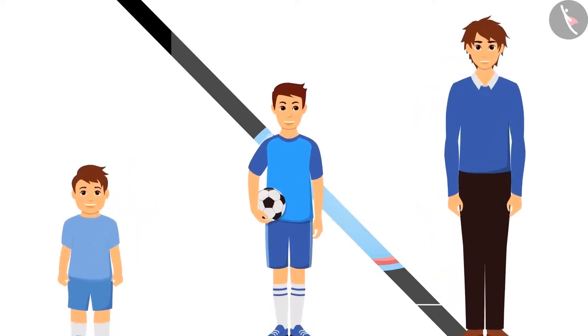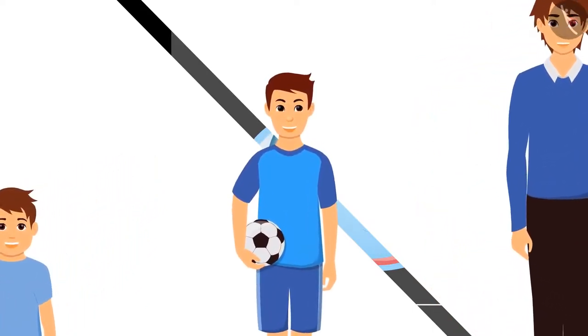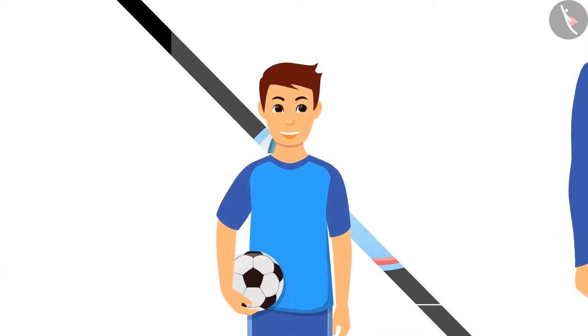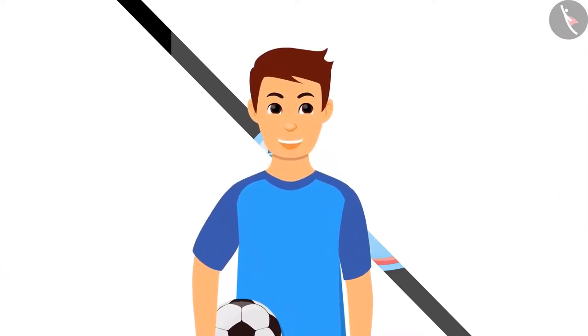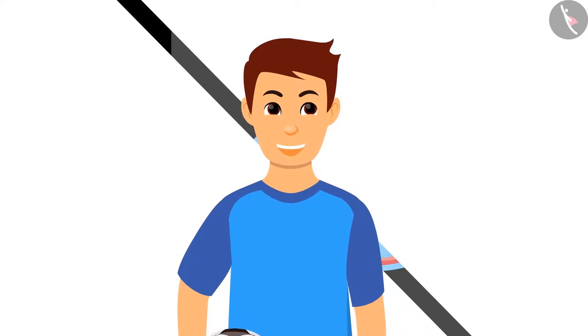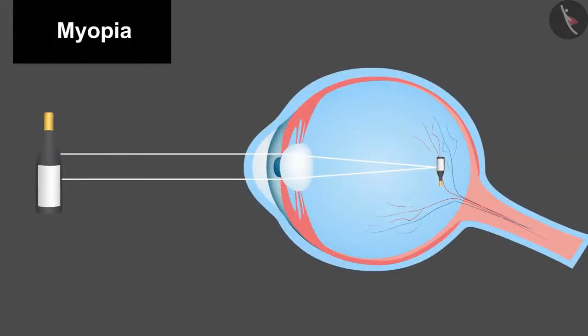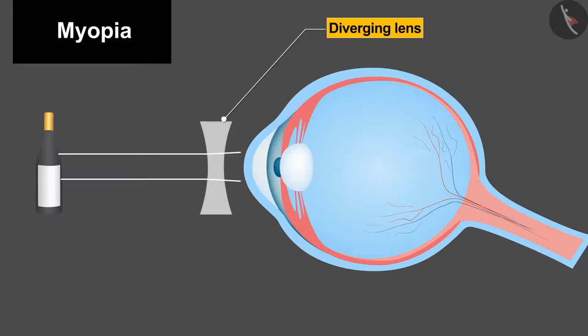As the converging power increases in this defect, the converging power will have to be reduced to correct it. But the power cannot be reduced, so we diverge the light coming from outside. And for this, we can put a divergent lens or concave lens in front of the eyes and let the image be formed on the retina.